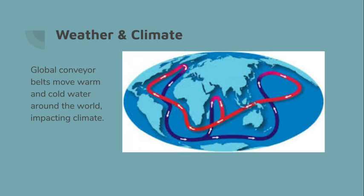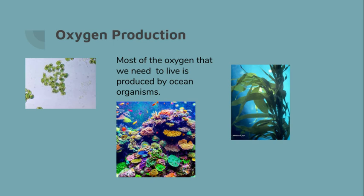We've previously discussed the Gulf Stream and how that warm water moves northward. It makes the climate in England, for instance, much more temperate and mild than it would be otherwise.